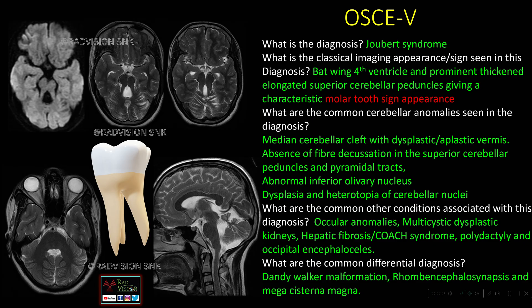There is also an abnormal inferior olivary nucleus and dysplasia and heterotopia of the cerebellar nuclei. Other common associations include ocular anomalies, multicystic dysplastic kidneys, hepatic fibrosis (Coach syndrome), polydactyly, and occipital encephalocele. The common differential diagnoses are Dandy-Walker malformation, rhombencephalosynapsis, and mega cisterna magna. Remember the classical molar tooth sign in Joubert syndrome.